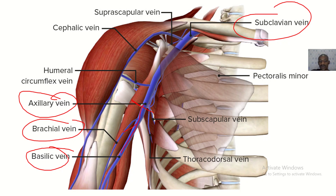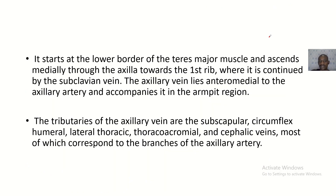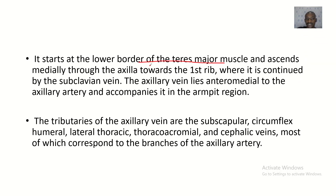The axillary vein begins at the lower border of teres major, ends at the clavicle — anything outside the clavicle is the subclavian vein. It starts at the lower border of teres major and ascends medially through the axilla towards the first rib, where it continues as the subclavian vein.